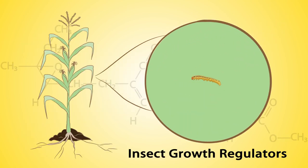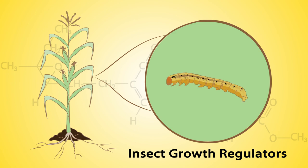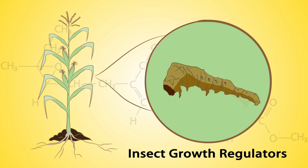Insect growth regulators inhibit the normal life cycle of insects by copying one of these hormones, directly interrupting cuticle development or loss in fat building. These would make insects die from staying in the immature life stage indefinitely.